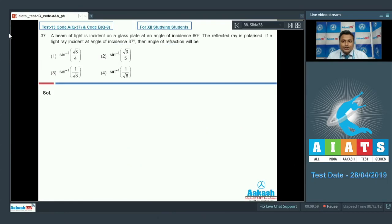Here is question number 37, everyone. A beam of light incident on a glass plate at an angle of 60 degree, the reflected ray is polarized. If the light ray incident at an angle of 37 degree, then the angle of reflection will be what? Question belongs to polarization and according to law of Brewster.